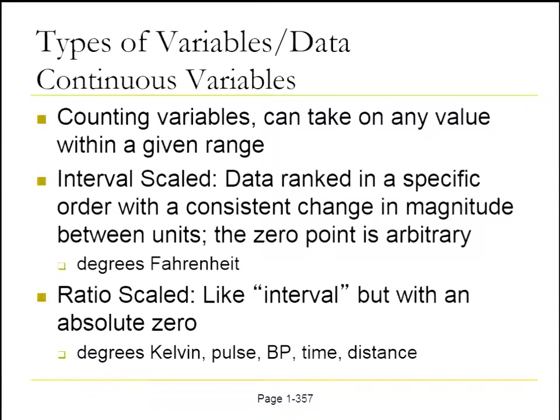Continuous variables, on the other hand, are counting variables — they can take any value within a given range. There are two main types of scales. Interval scale data are ranked in a specific order with a consistent change in magnitude, but the absolute zero value is arbitrary; the most common example is degrees Fahrenheit. Ratio scale data have a fixed absolute zero — degrees Kelvin is the example. Many common clinical measures such as heart rate, blood pressure, time, and distance are examples of ratio scale data.